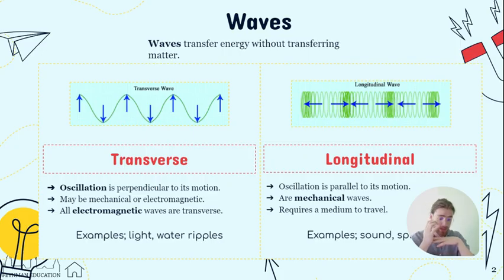This is usually your electromagnetic waves, so all your electromagnetic waves are transverse waves. You can also get mechanical waves such as water ripples or waves like in the ocean. Light would also be considered a transverse wave because it's electromagnetic.